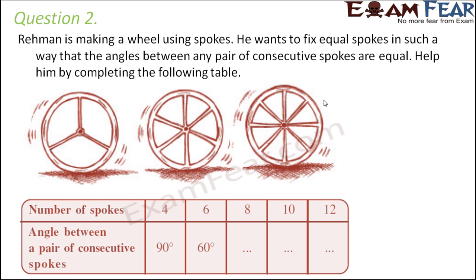Question number 2. Rehman is making a wheel using spokes. He wants to fix equal spokes in such a way that the angles between any pair of consecutive spokes are equal. Help him by completing the following table. So when you say spokes, you mean these kind of lines which divide this circle into multiple sectors.